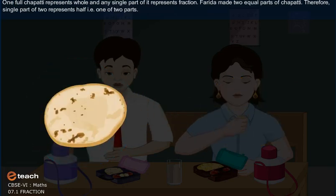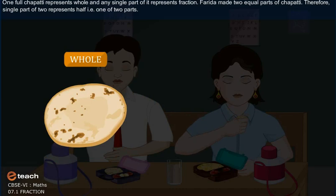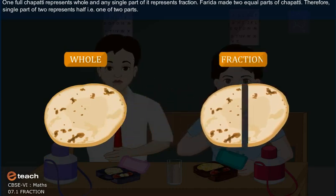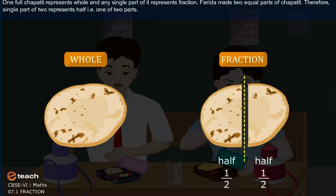One full chapati represents whole and any single part of it represents a fraction. Farida made two equal parts of a chapati. Therefore, single part of two represents half, that is, one of two parts.